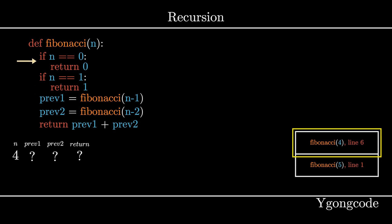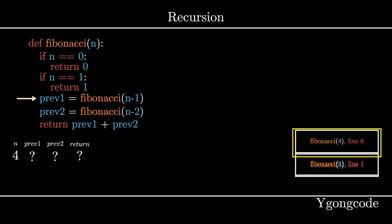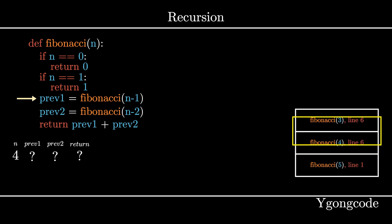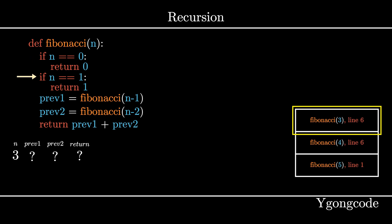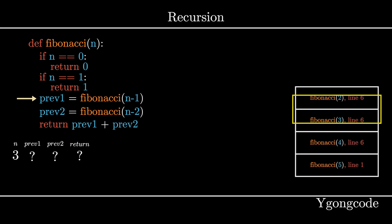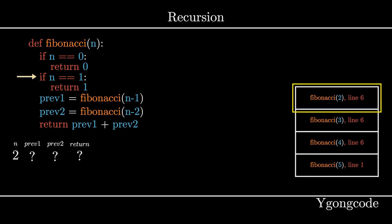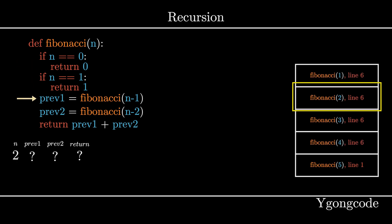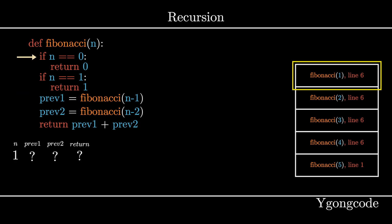At Fibonacci(4), we call Fibonacci(3) and add it to the stack. At Fibonacci(3), we call Fibonacci(2) and add it to the stack. At Fibonacci(2), we call Fibonacci(1) and add it to the stack. At Fibonacci(1), we hit a base case — we return 1 and pop Fibonacci(1) off the stack.